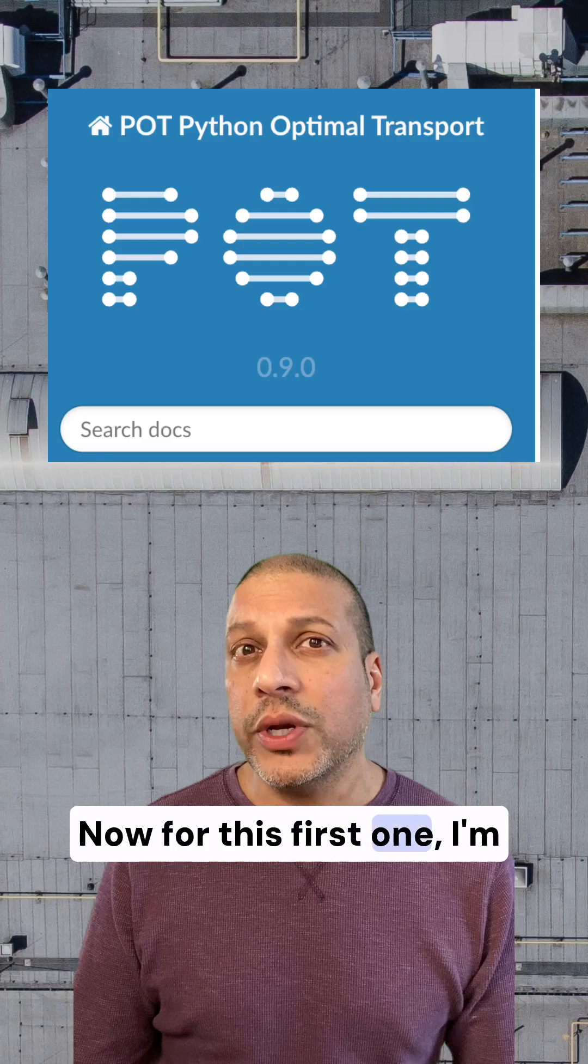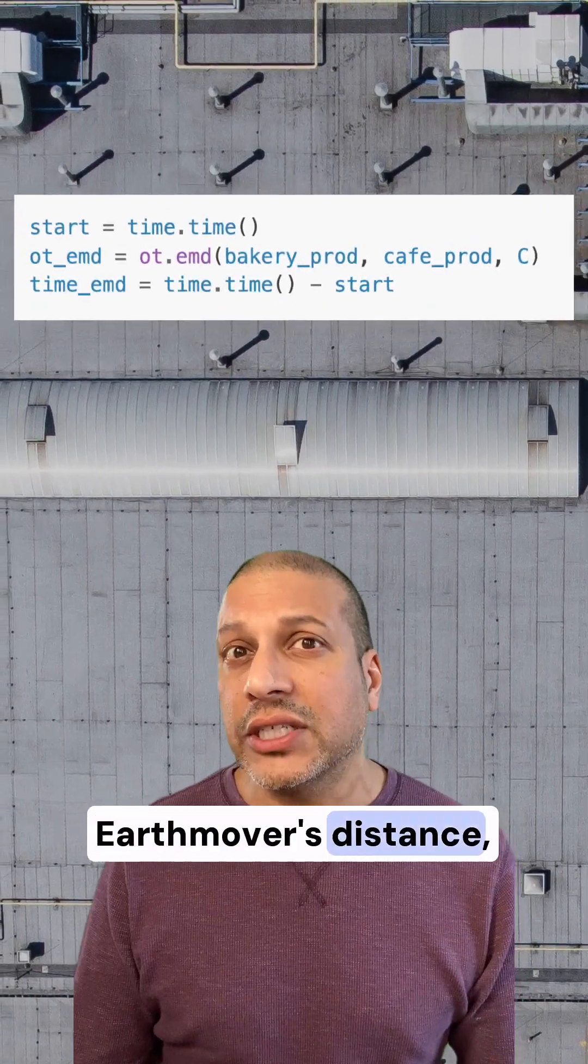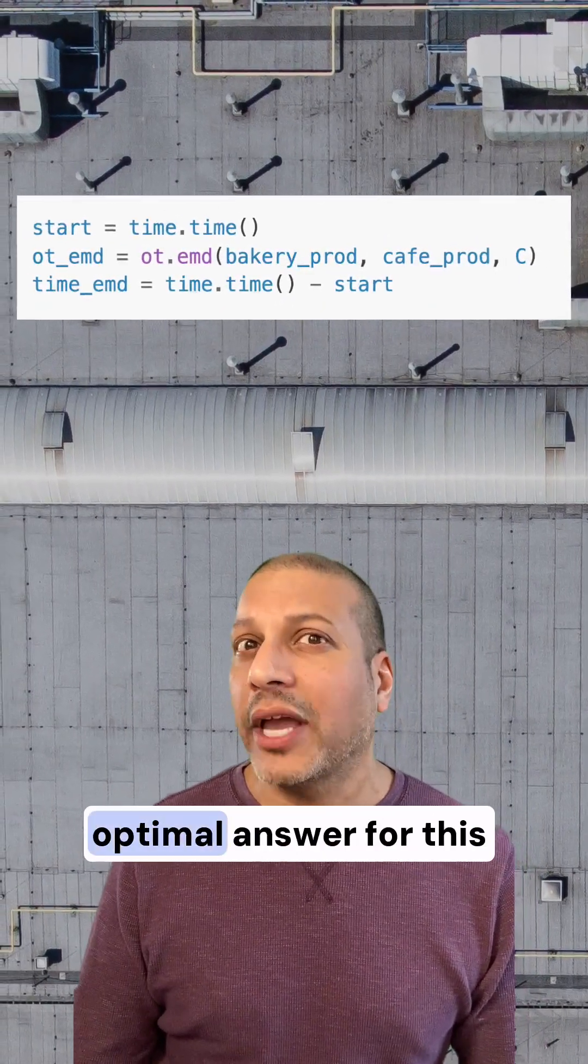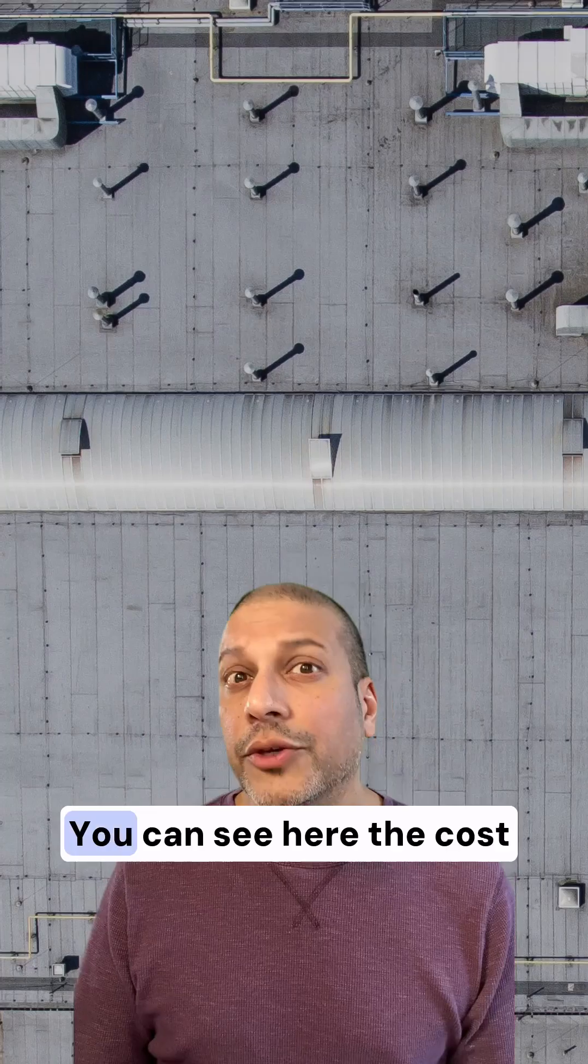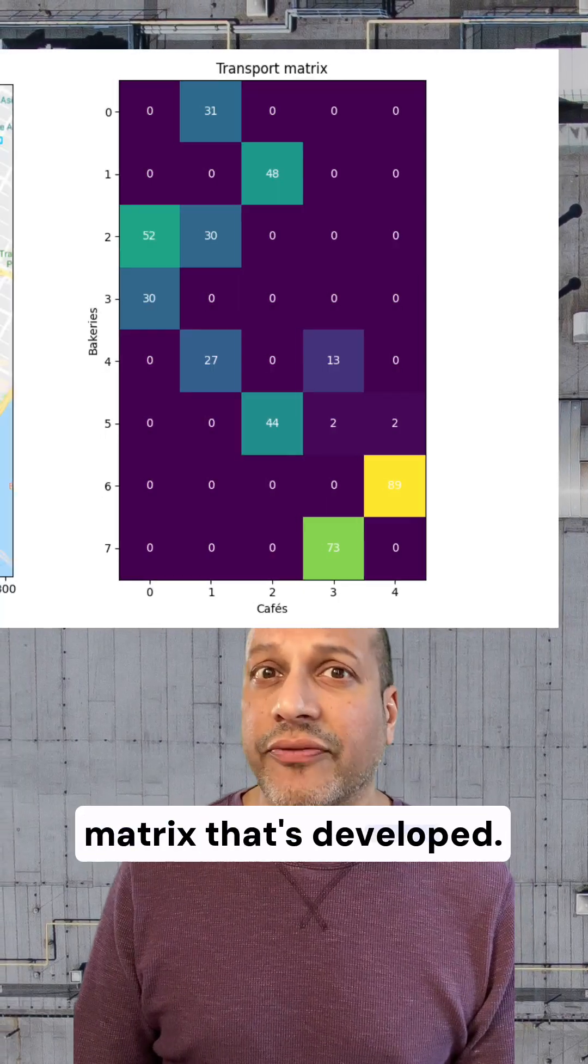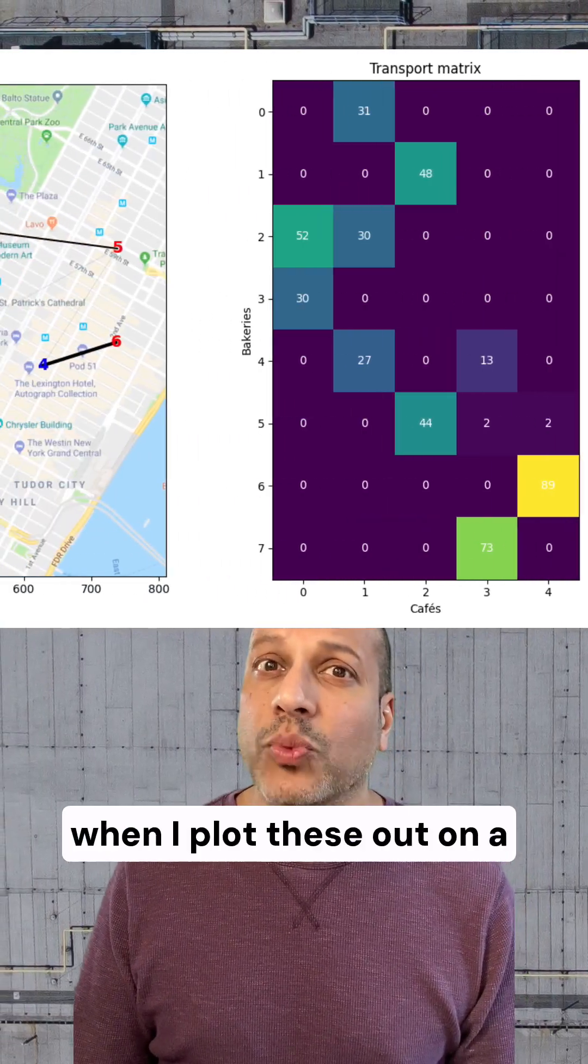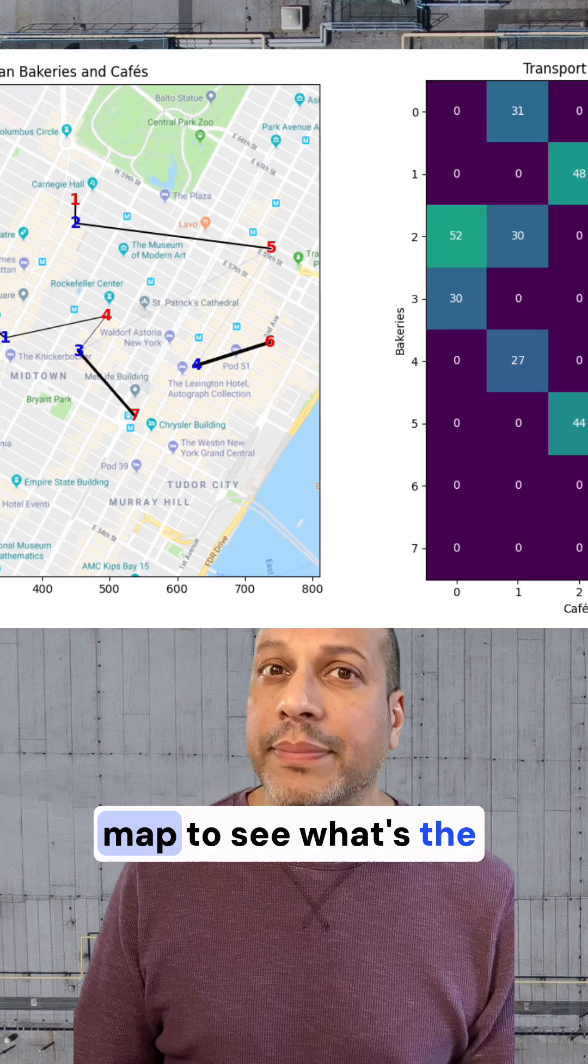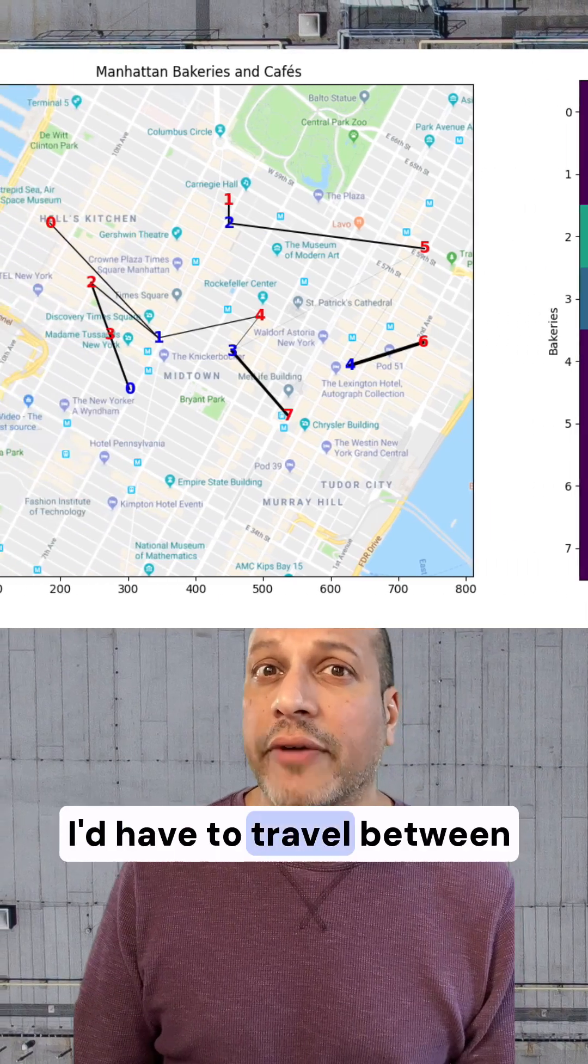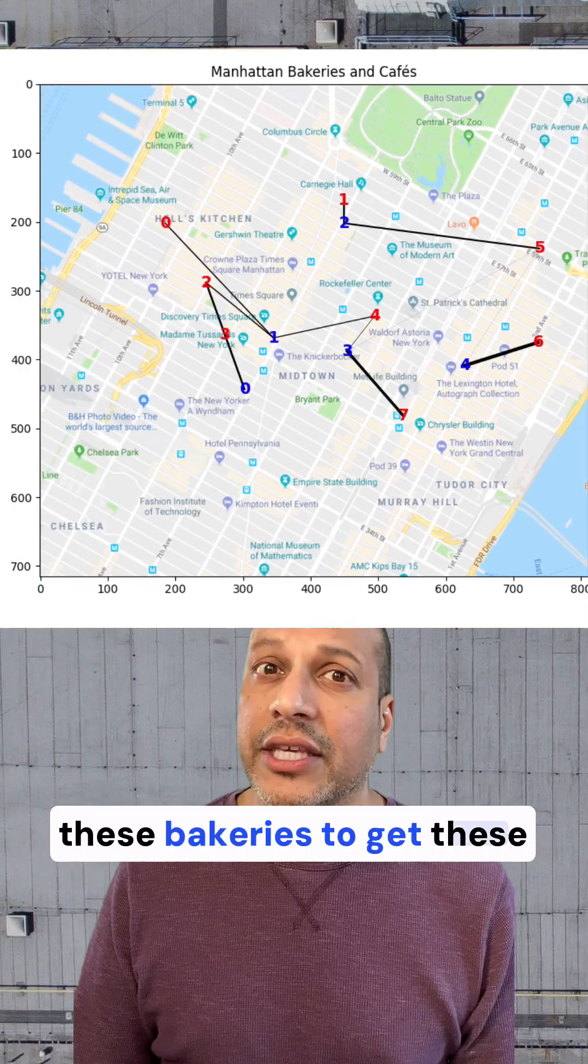Now for this first one, I'm going to use the earth movers distance, which will give me the optimal answer for this problem. You can see here the cost matrix that's developed, as well as what happens when I plot these out on a map to see what's the distance I'd have to travel between these bakeries to get these croissants to them.